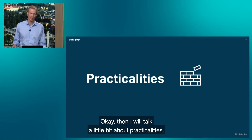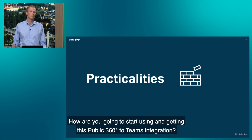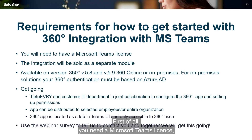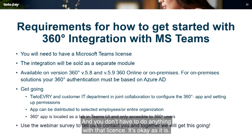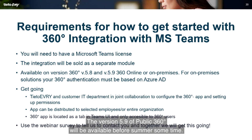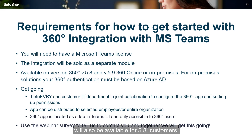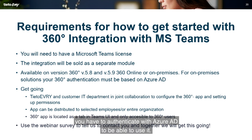Now for practicalities — how do you get started with the Public 360 Teams integration? First, you need a Microsoft Teams license, which you probably already have, and you don't need to do anything additional with that license. From the Public 360 side, this integration will be sold as a separate module. Version 5.9 of Public 360 will be available before summer, and at that time the Teams integration will also be available for 5.8 customers. Both online and on-premises solutions are supported, though for on-premises you must authenticate with Azure AD.